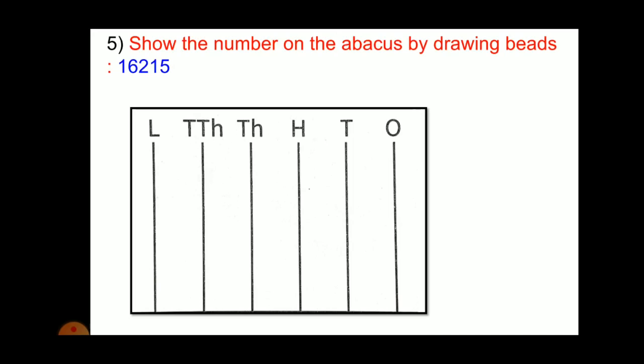We will start from 1's place. That is, 5. So 5 beads. Then, at 10's place, we have 1. At 100's place, we have 2. At 1000's place, we have 6. At 10,000's place, we have 1.